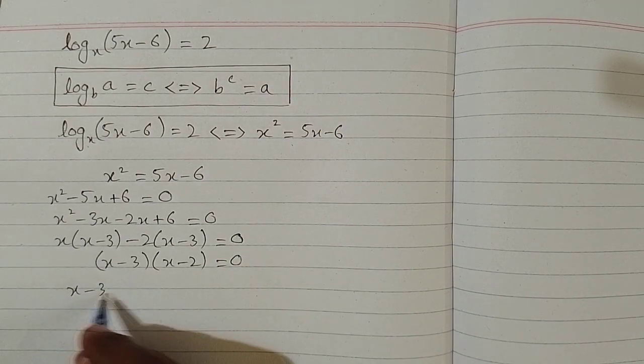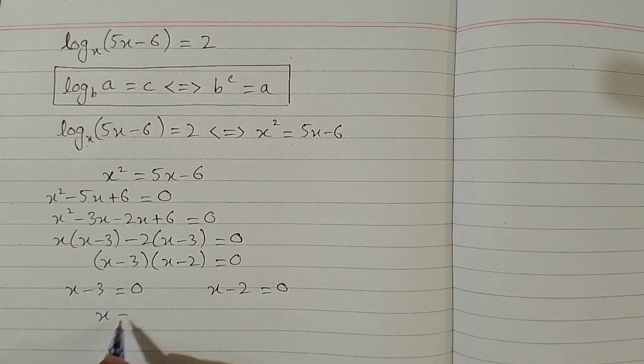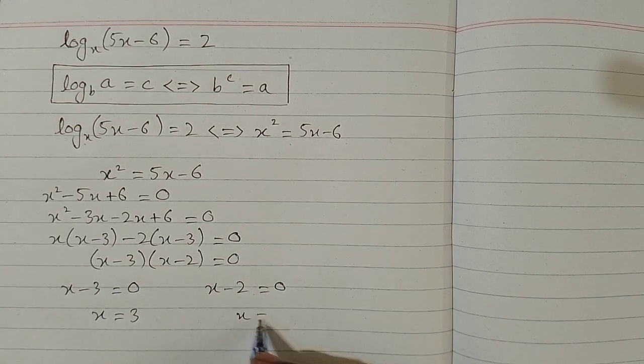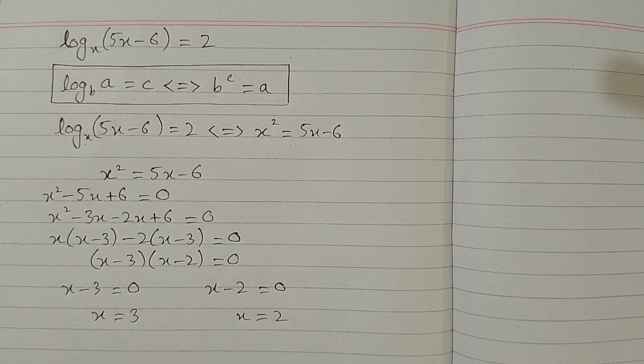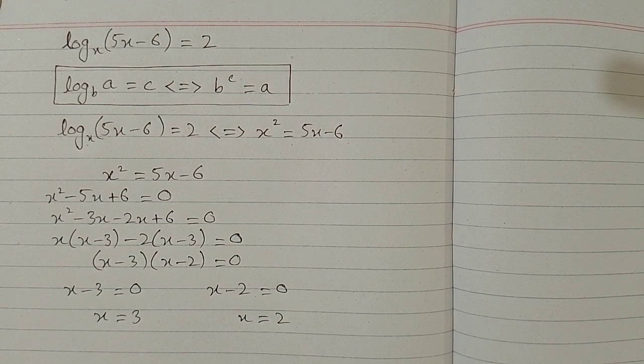So either x minus 3 is equal to 0 or x minus 2 is equal to 0. So the value of x is 3 and the value of x is 2. And this is the required solution of the given logarithmic equation.